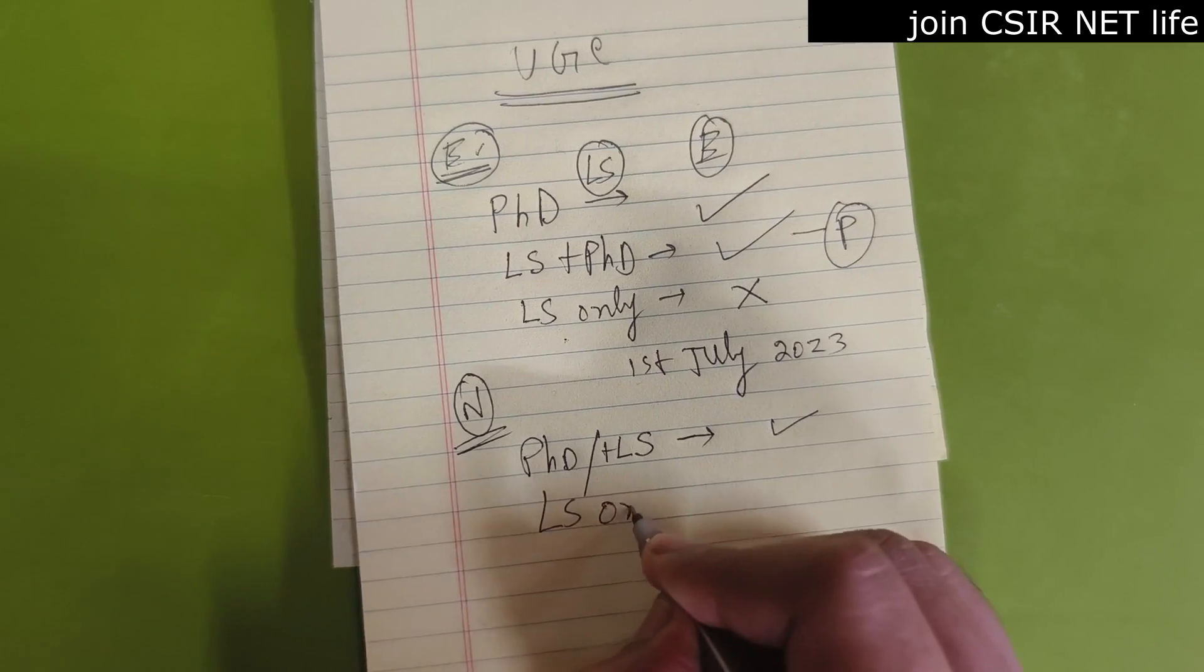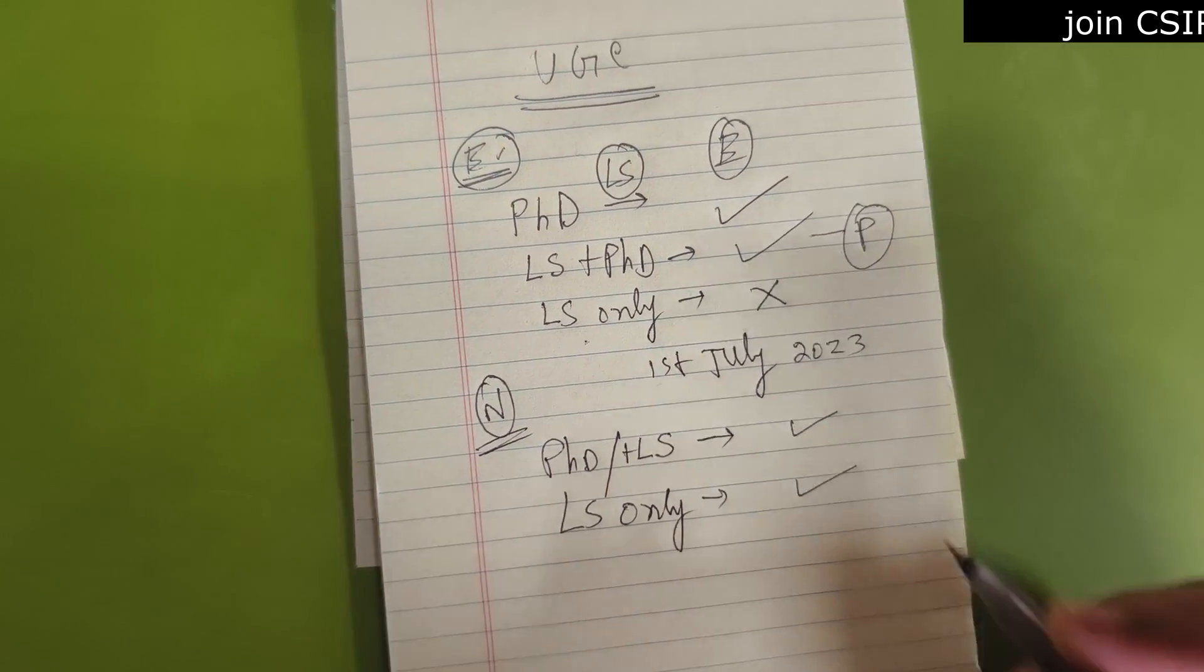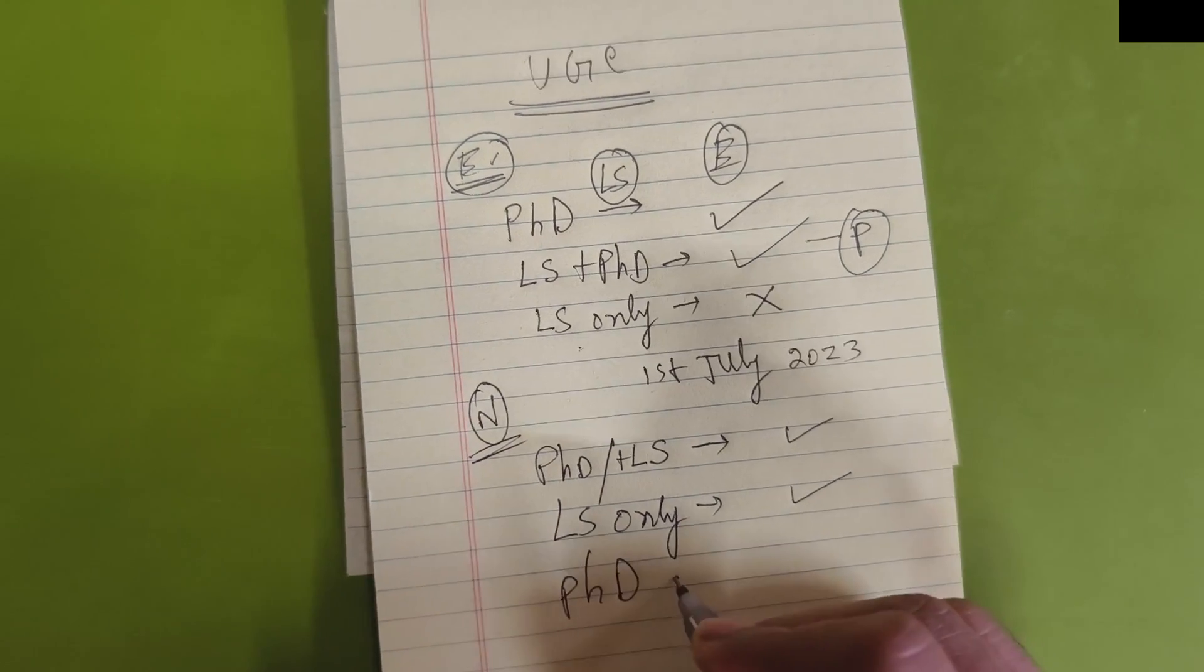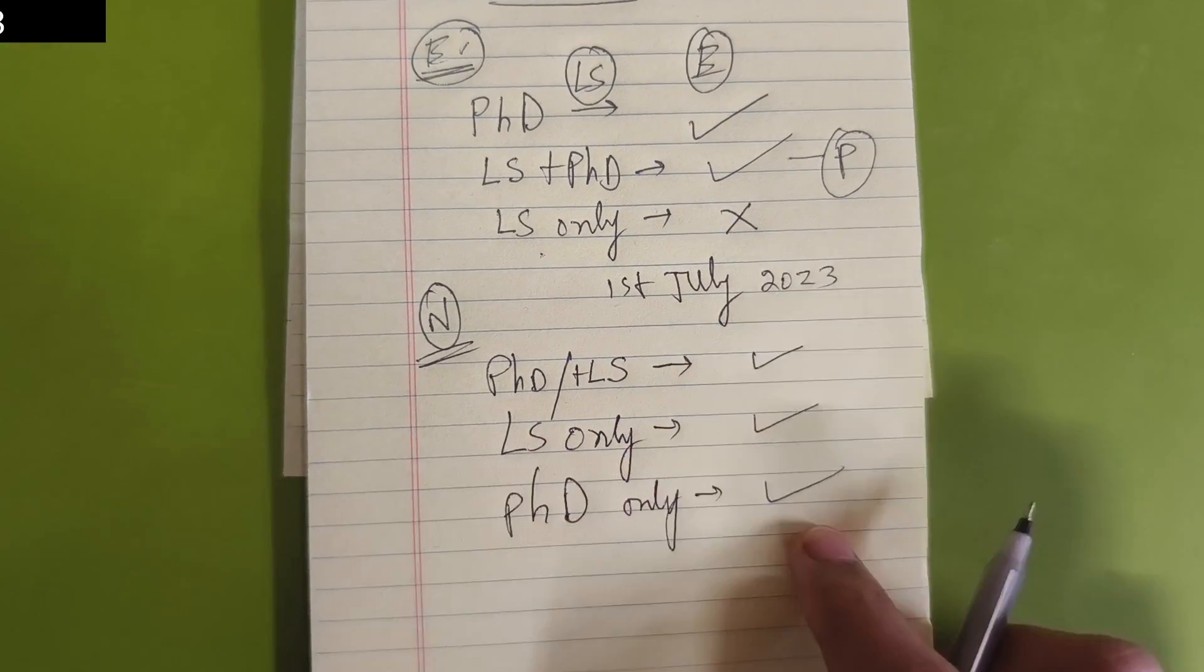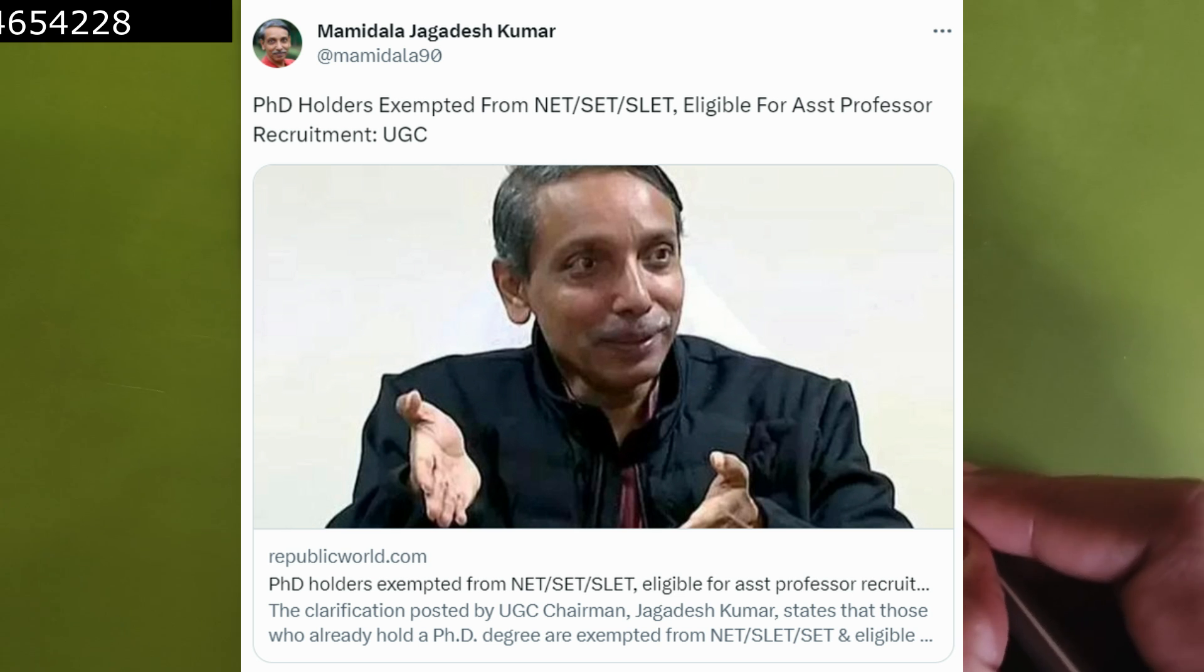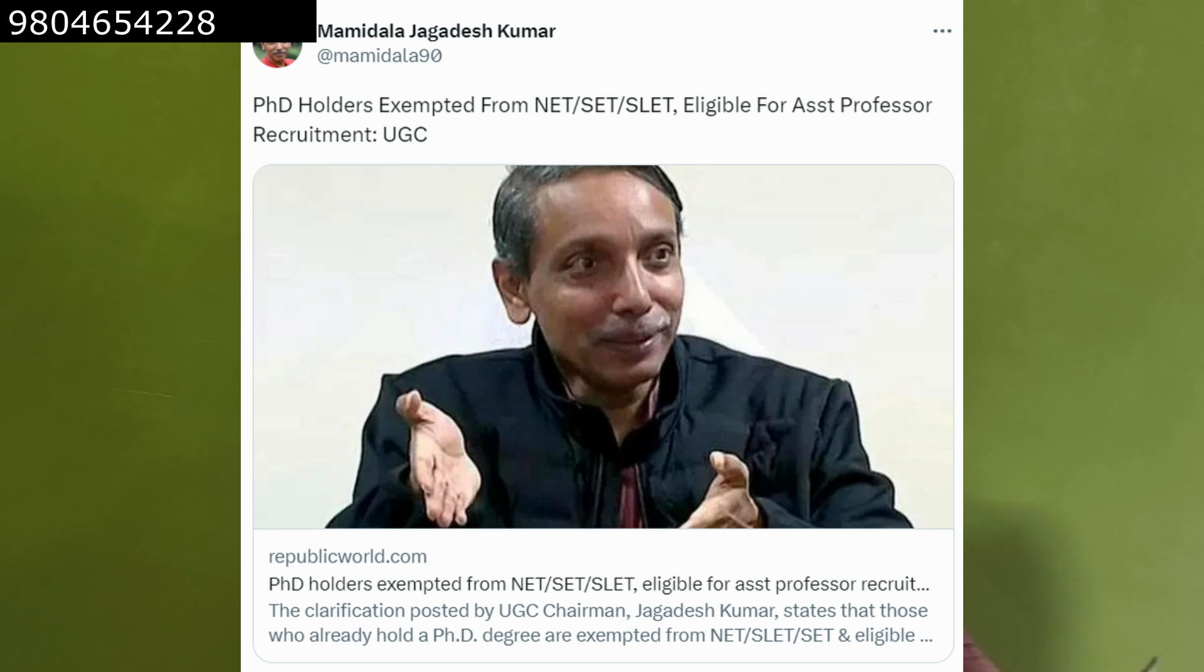But if you have LS only, you are still eligible. If you are PhD only, you are still eligible for assistant professor position in permanent positions. Remember, all of them are permanent tenure position in colleges and universities.